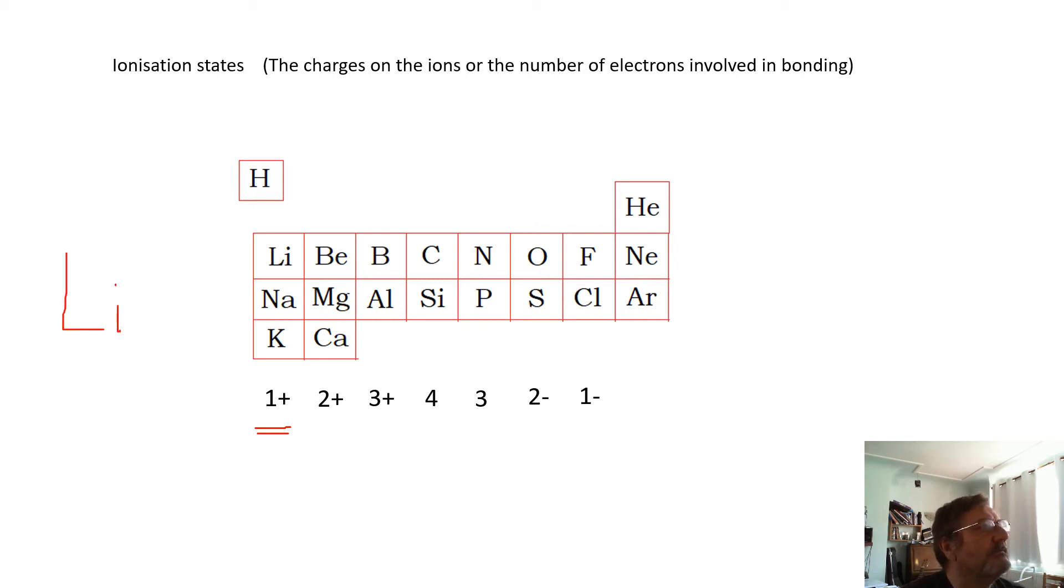So if they get rid of an electron, then you're going to end up with Li+. A lithium ion is Li+, and that is called its ionization state—its ionization state is +1. Group two, it's +2. Group three, it's +3 or 3+. These guys here don't commonly form ionic compounds, but if they're involved in bonding, this is how many electrons.